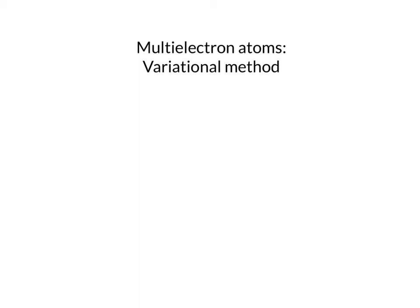In this video, we're going to look at the method that we use to solve the multi-electron Hamiltonian, and that is called the variational method. In this method, we notice that our Hamiltonian can be written in terms of a Hamiltonian for electron one plus a Hamiltonian for electron two plus however many electrons we have, plus the repulsive potential between those electrons.